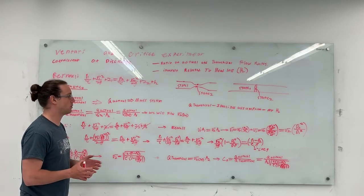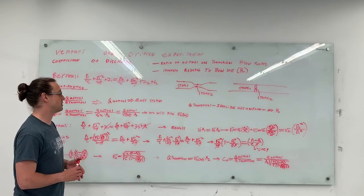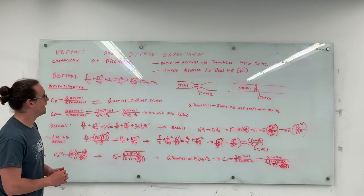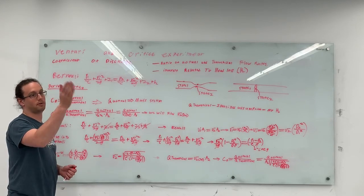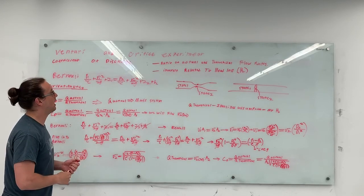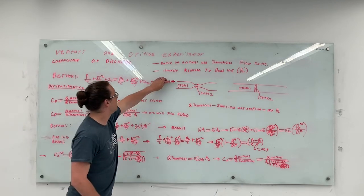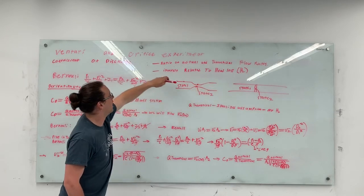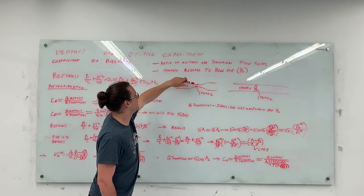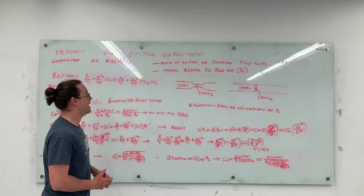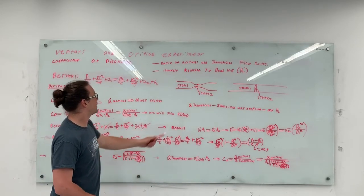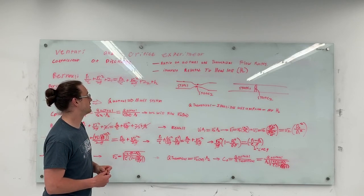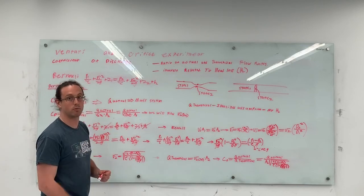Not the most complicated thing in the world, but it isn't super straightforward. Effectively what we'll be doing is — I'll give you the diameters of all the different sections. You'll need d1 and d2 for the Venturi, and d1 and d2 for the Orifice. With those diameters and the pressure differences, which we will also go over, you'll have everything needed to find q theoretical.